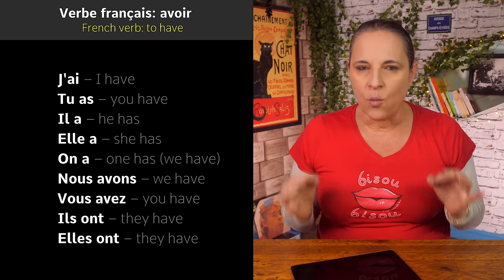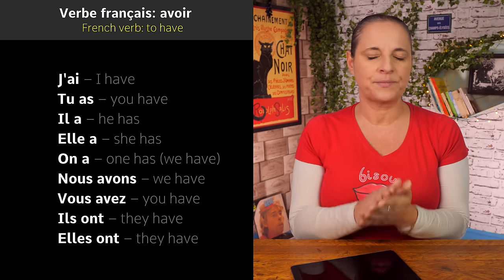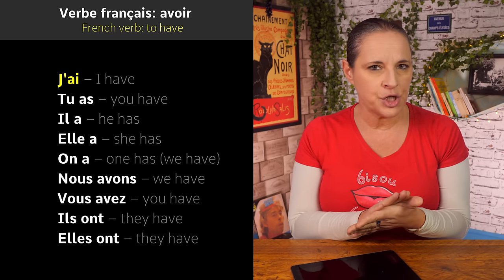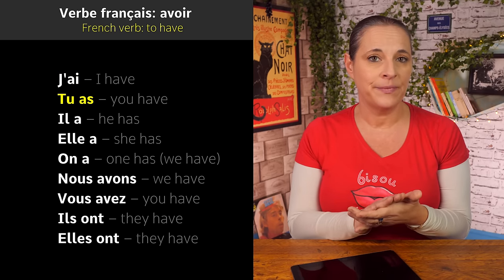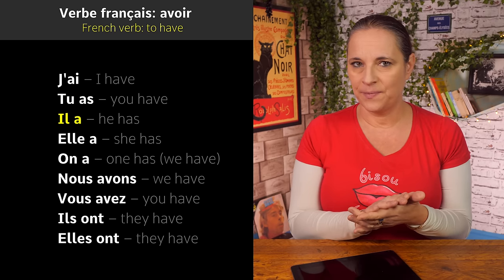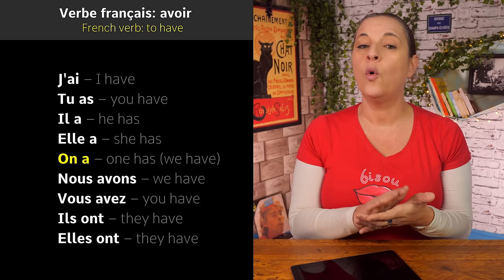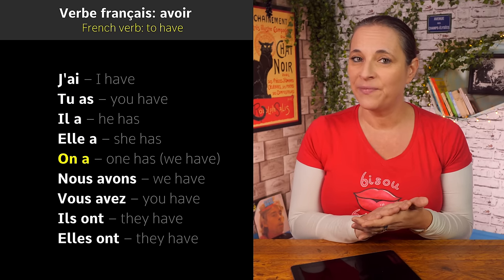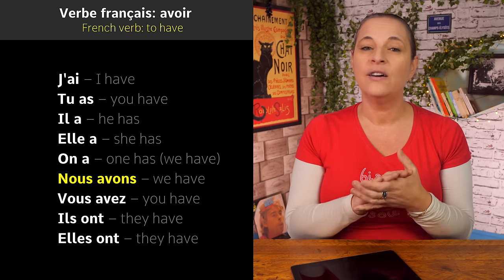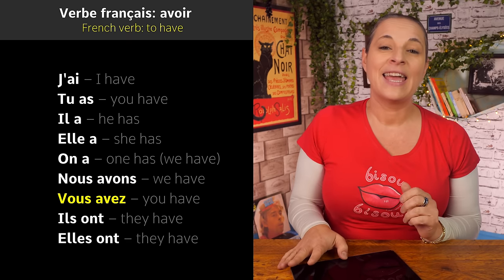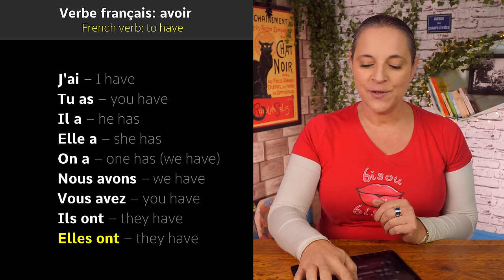Repeat once more after me, and then we practice with sentences: j'ai, tu as, il a, elle a, on a, nous avons, vous avez, ils ont, elles ont.